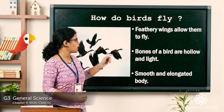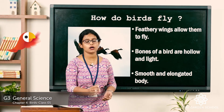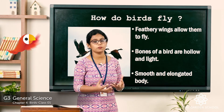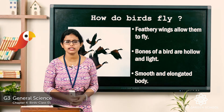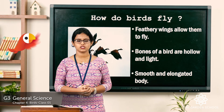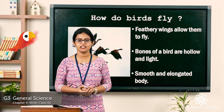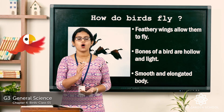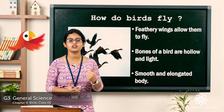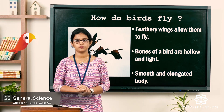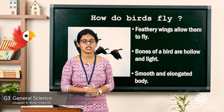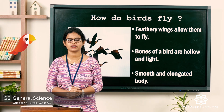These are some of the special features of birds: feathery wings that allow them to fly, hollow and light bones, and a smooth and elongated body. Today we learned about the different body parts of a bird — eyes, wings, tail, beak, legs, and feet — and the three types of feathers: body feather, down feather, and flight feather. We also learned the special features that help birds fly. We'll meet in the next class to discuss a new topic. Thank you.